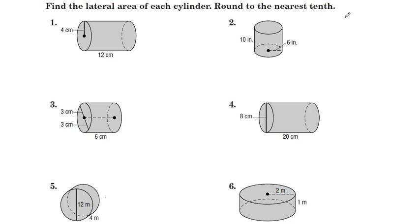Hello everybody. In these examples we're just going to do the lateral surface area of cylinders, and we're going to round our answer to the nearest tenth. The lateral surface area of a cylinder follows this formula: L equals 2 pi times the radius times the height.